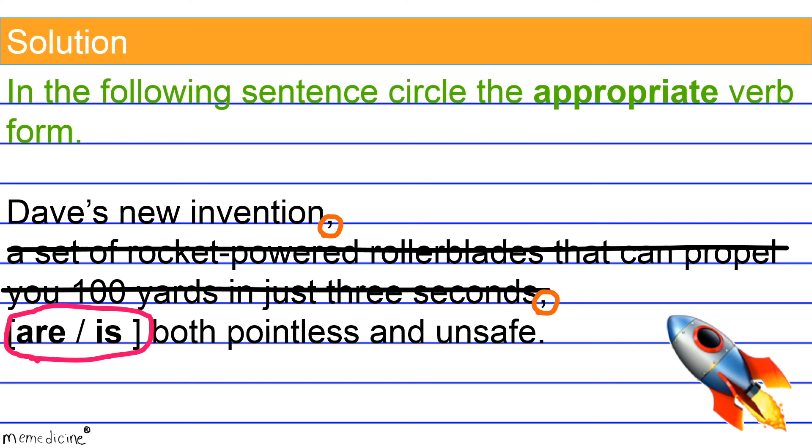The main verb only has to agree in number with the core noun that the interrupting phrase is describing. Now that we've stripped away the elaborate description, it's much easier to correctly pair the subject with the proper verb form. We are now isolating the core sentence. We can ask ourselves which verb choice agrees with the singular subject, Dave's new invention. We can match Dave's new invention with the simple present verb form, is, and follow up by using our ear to determine if our selection sounds correct.